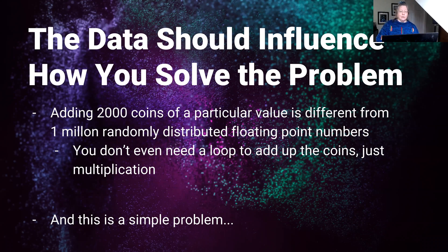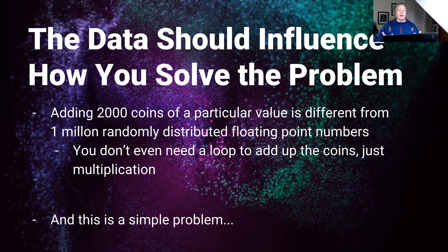Knowing your data can greatly impact the solution — and it should. Adding 2,000 coins of a particular value is very different from 1 million randomly distributed floating point numbers. If you just want to add coins of a specific value, you ask: how many coins do I have? Use a counter, then multiply by the coin's value. It just needs a multiplication — it doesn't even need a loop.